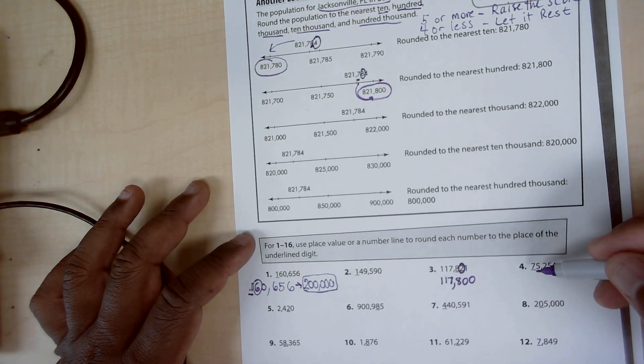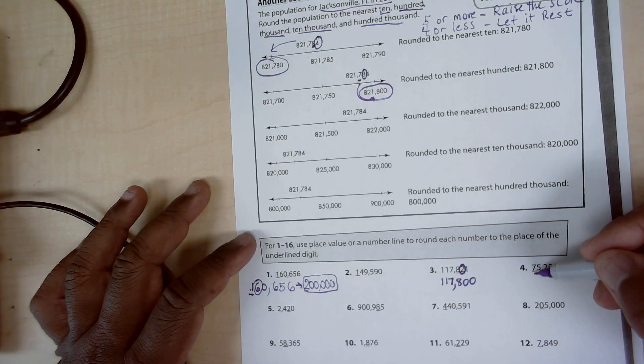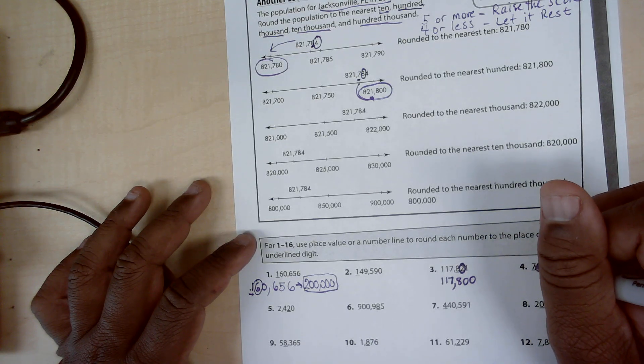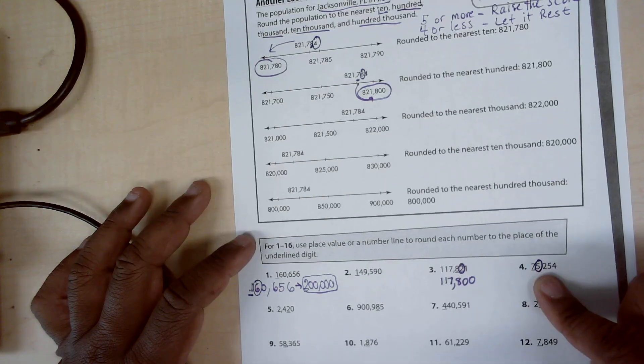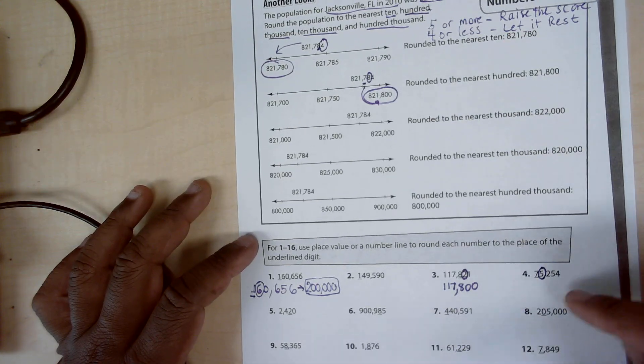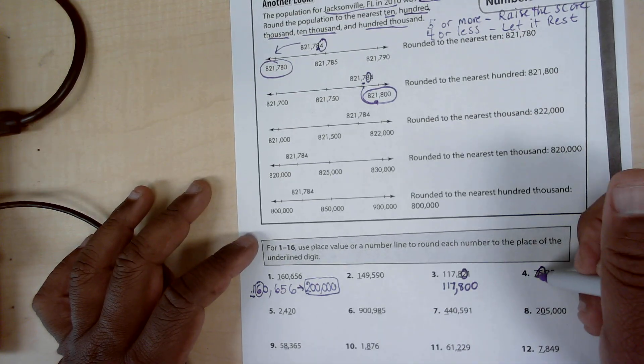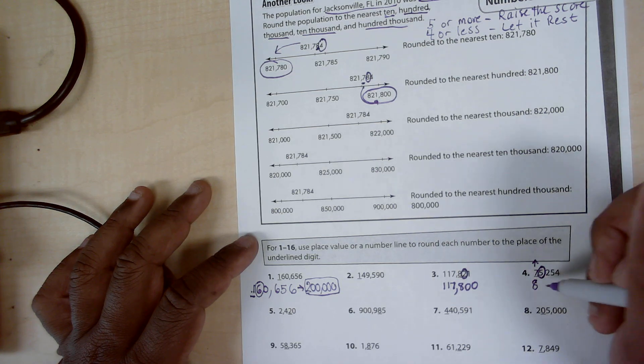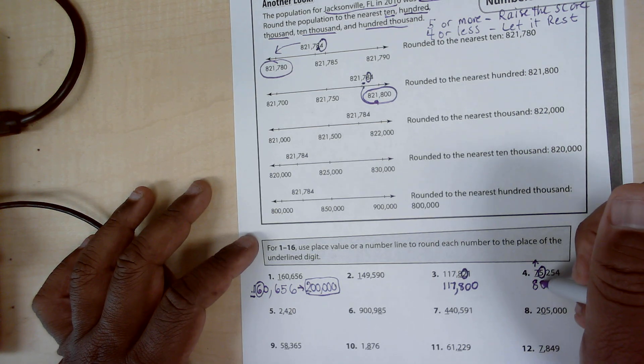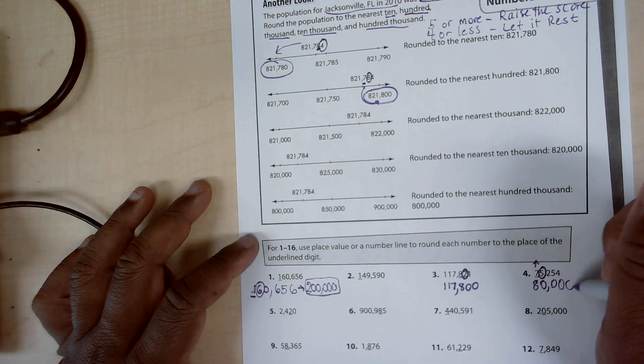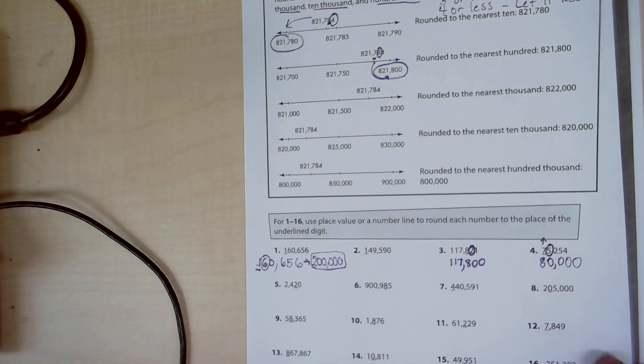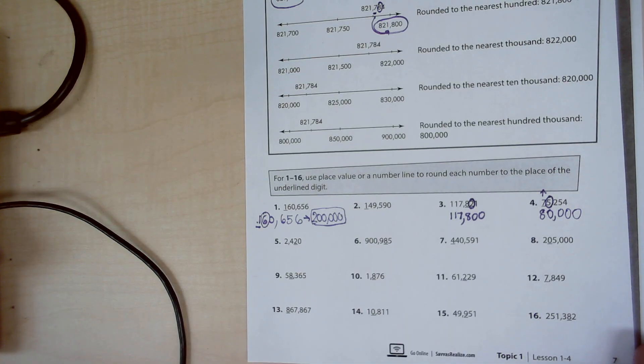Notice that the seven is underlined, so that's ten thousands, and I circled the digit to the immediate right, so five. Five or more, raise the score. So seven goes up to an eight, and all the digits after it become zeros, so it's eighty thousand. So continue to use that strategy for the rest of these problems.